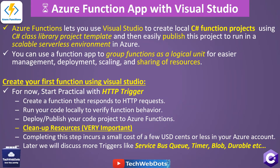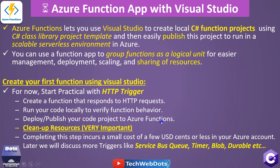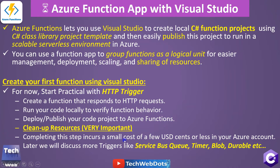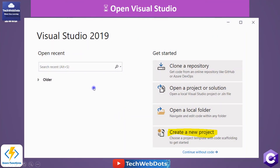We will create a practical with an HTTP trigger — a function that responds to HTTP requests. We will run the code locally to verify the function behavior, and once confirmed working, we can publish the project to Azure Functions. One important thing: after completing all your work you should clean up your resources, which is very important. This may incur a small cost — maybe a few USD cents or one to two euros in your Azure account. Later we will discuss more triggers like Service Bus, Timer, Blob, and Durable Functions.